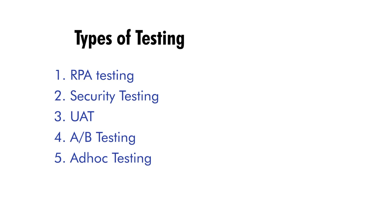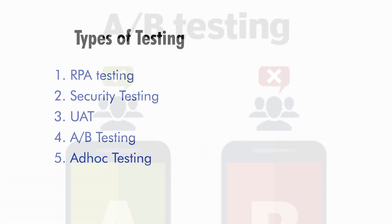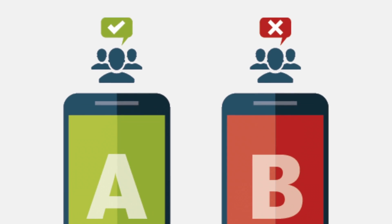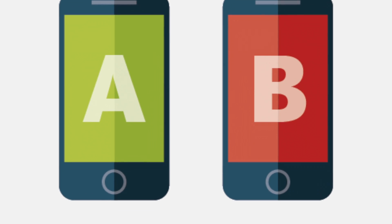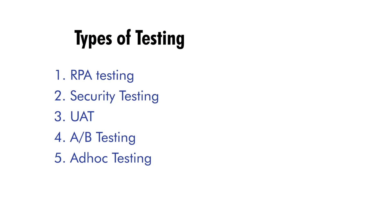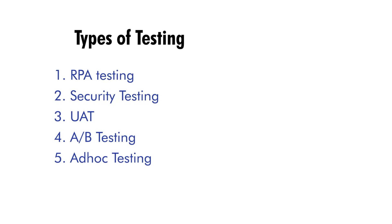Next is A/B testing — an important software testing technique in which two different versions of conversational bots are showcased to users. The versions can vary in UI and visual factors like colors, text size, and style. User feedback is then collected to find out which version is better and more liked. This ultimately helps businesses release the product that matches users' expectations.